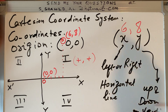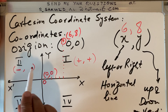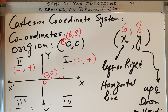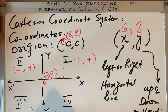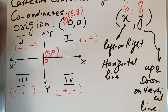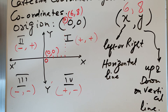In the first quadrant, both x and y are positive. In the second quadrant, x is negative but y is positive. In the third quadrant, both x and y are negative. In the fourth quadrant, x is positive but y is negative. So: positive x is to the right, negative x is to the left, positive y is up, and negative y is down.